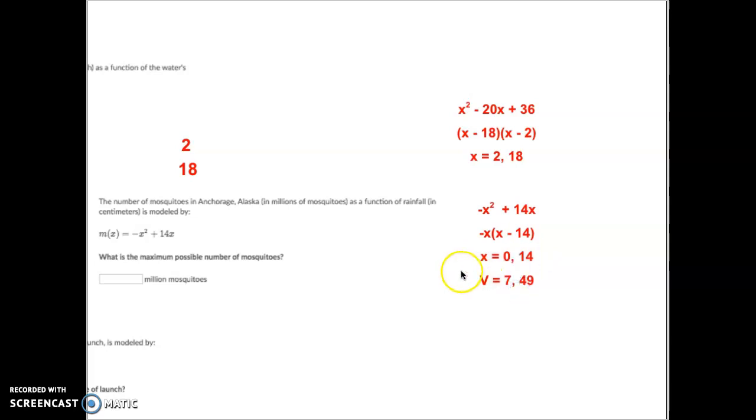But we want to know how many mosquitoes are over here - what's the highest point? So as we plug 7 into our original equation, what does that equal? In this case it comes out to equal 49. You're certainly welcome to do the math if you don't trust me. So our answer for this one is that we would have 49 million mosquitoes if we had seven centimeters of rainfall.